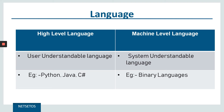High-level language is a user-understandable language — for example, Python, Java, and C#. Machine-level language is a low-level language; it is a language which the system understands and is in the form of binary, which is zero or one.